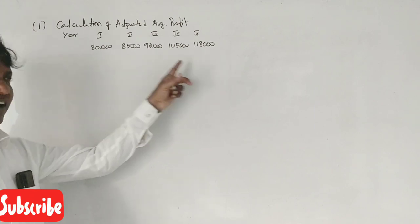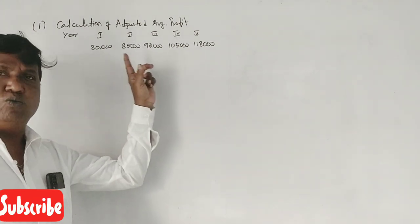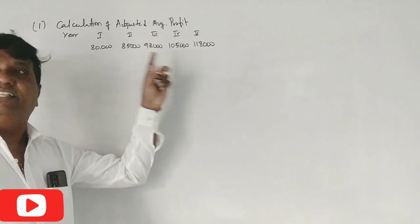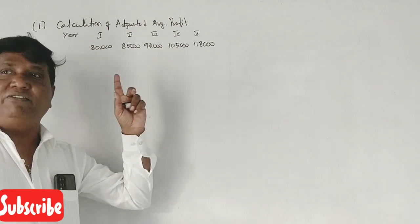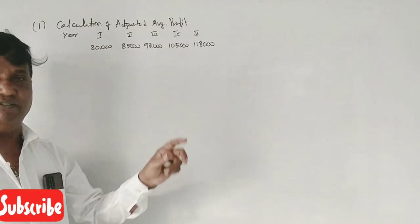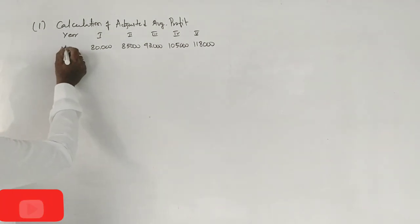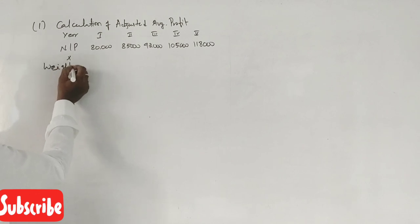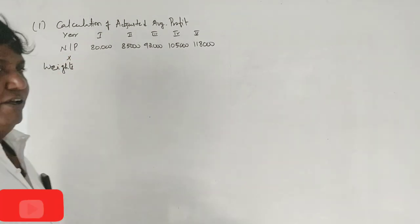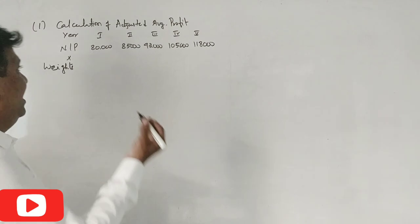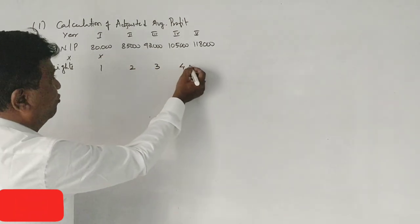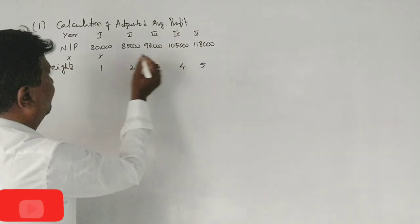Since the profits are increasing in nature, we use the weighted average method. We assign weights: 1, 2, 3, 4, 5 to the respective years and multiply each profit by its weight.